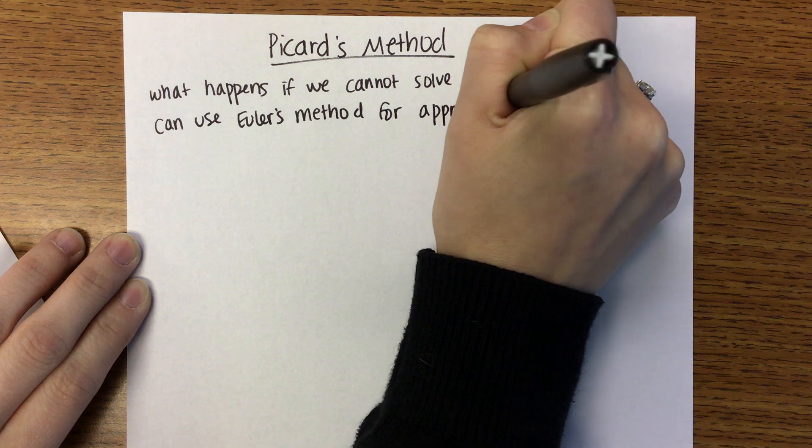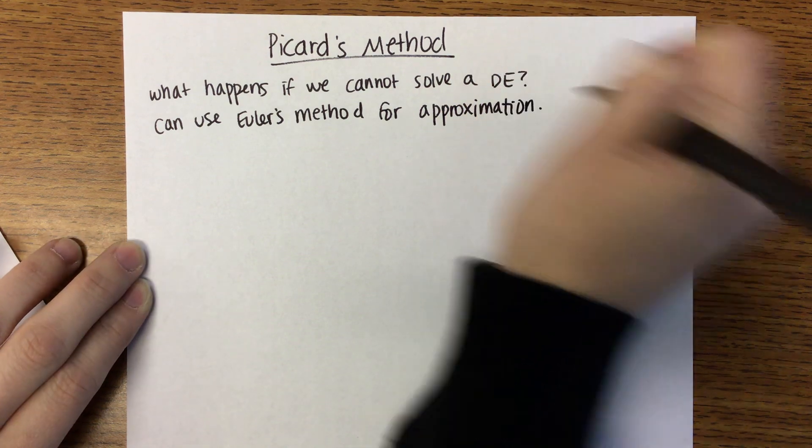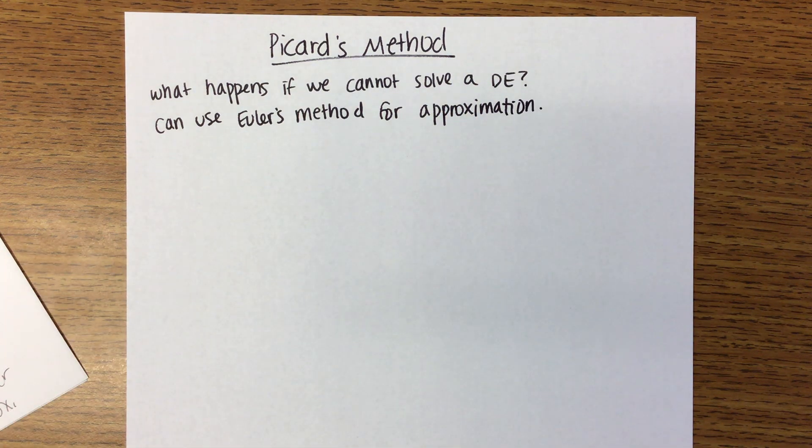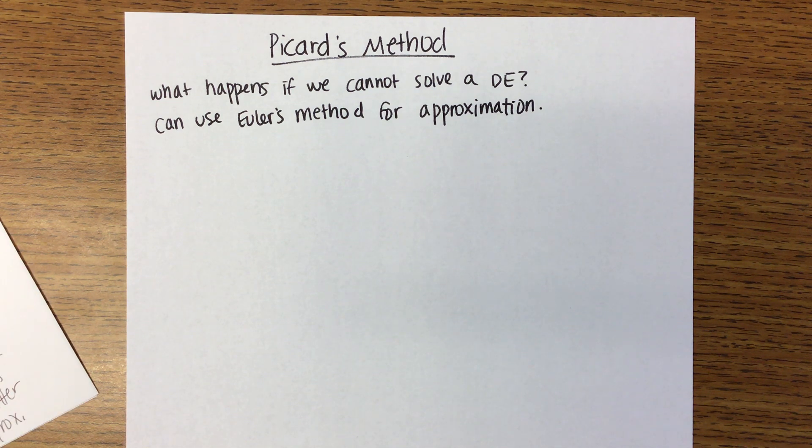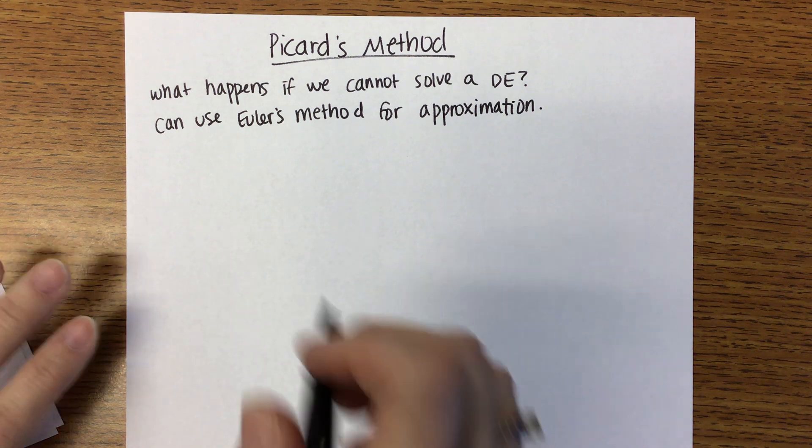We can use Euler's method to approximate a solution. Now, because you all learned that last year, I didn't feel like we needed to learn it again. Is that okay? Is anyone super upset? Will you get over it?